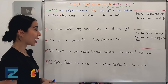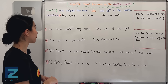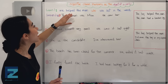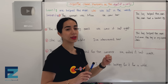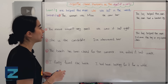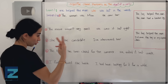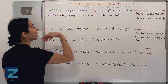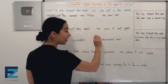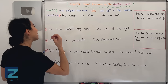Adjective clause pronouns as the object of the verb. Let's take a quick look at the previous lesson. We helped the man who was lost in the woods. We said this sentence is made up of two sentences. The first sentence: We helped the man. The second sentence: He was lost in the woods.